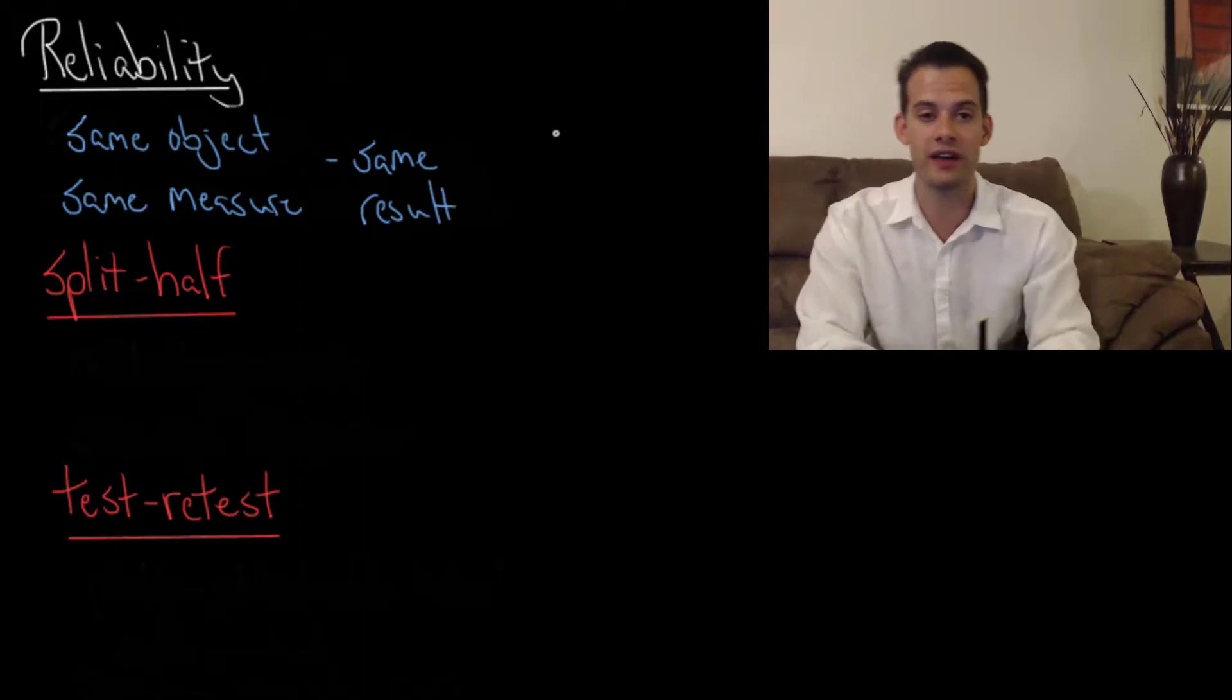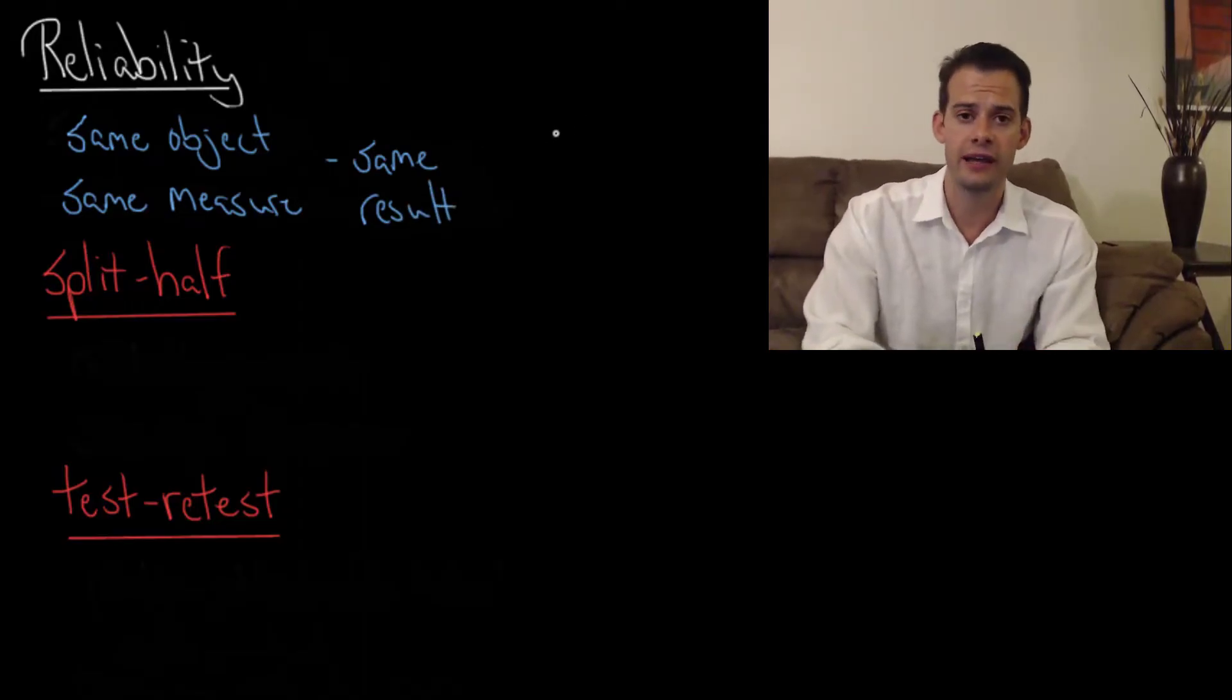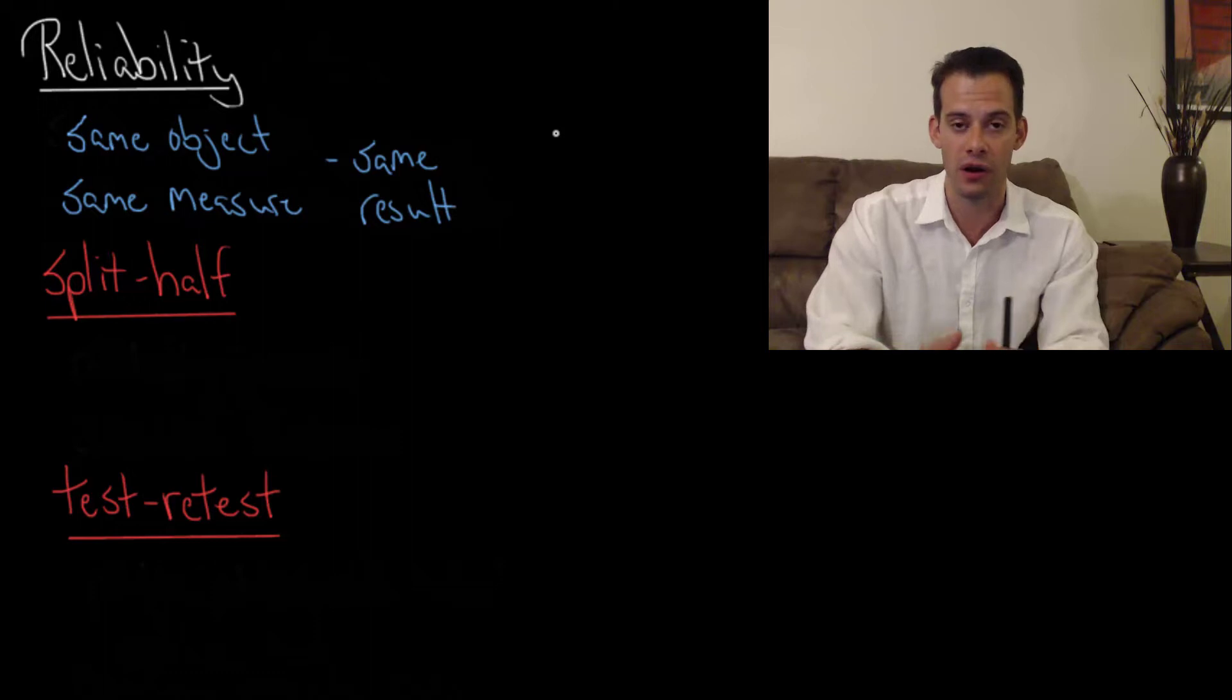So if you take an IQ test and you score 130 and then six months later you retake the same IQ test you should score 130 again. If you took the test again and you scored 70 the second time then that would indicate that the test is not reliable. Assuming that you hadn't had some sort of traumatic brain injury that would explain this large drop in your IQ we'd probably question the reliability of the assessment.